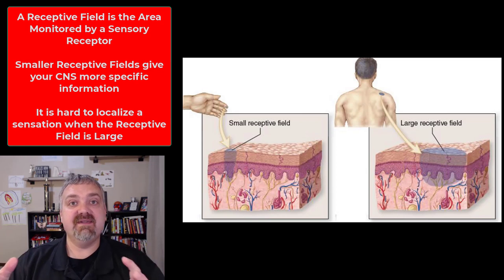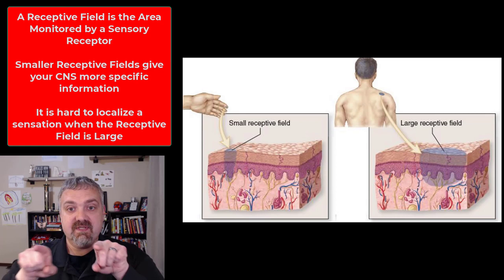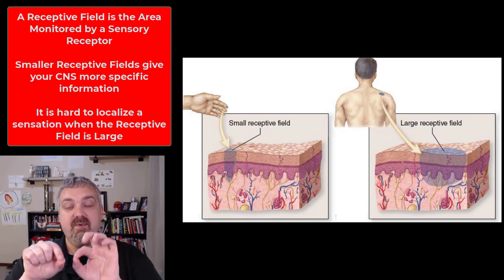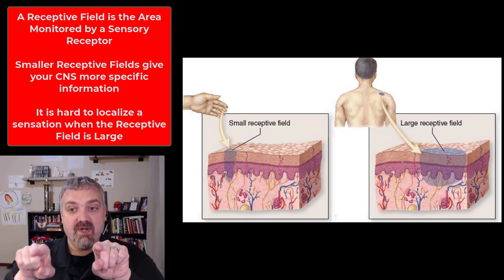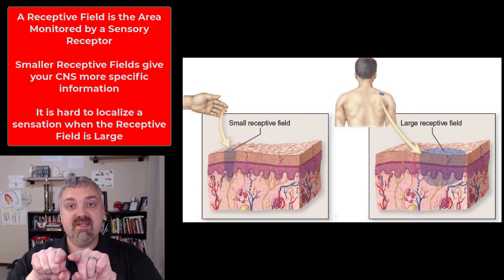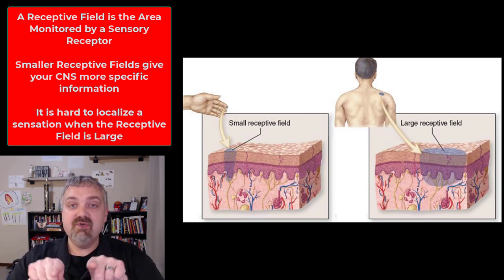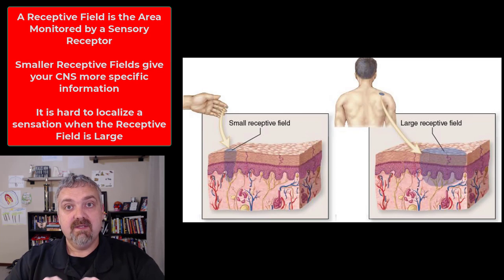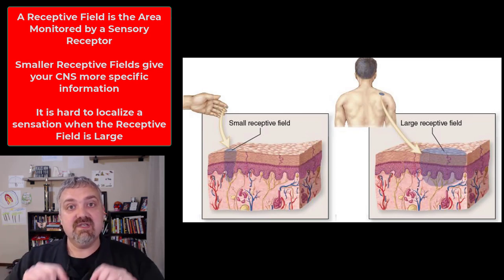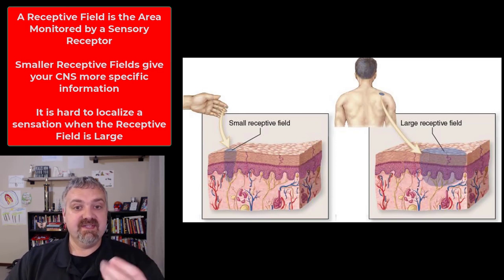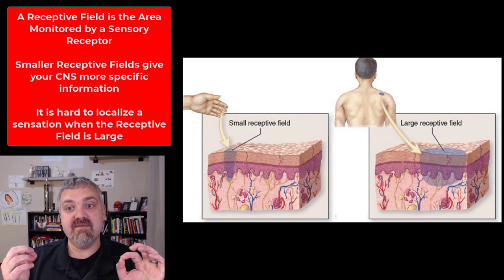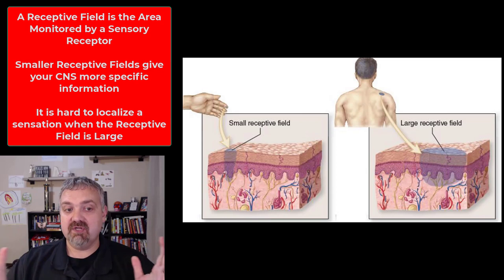To learn about receptive fields, one thing you can do is the two-point discrimination test. You use a slide rule with two little pins, or you can use a paper clip, and bring the points closer and closer together on someone's skin until all they feel is one stimulus. That means the two points are in the same receptive field. Small receptive fields are very specific — your fingertips and lips have really small receptive fields, while the skin on your back has much larger ones.